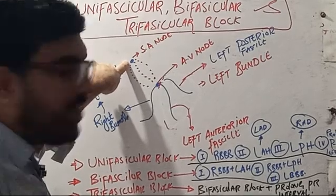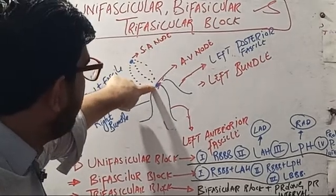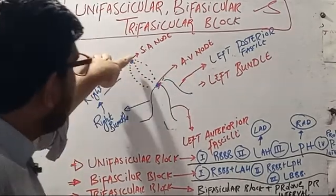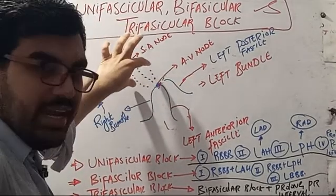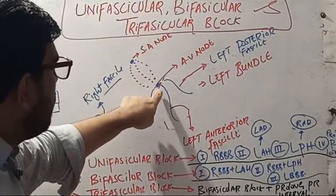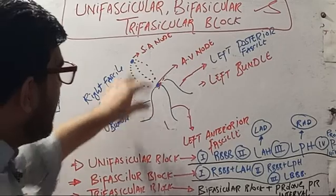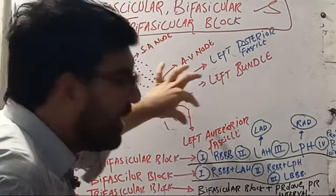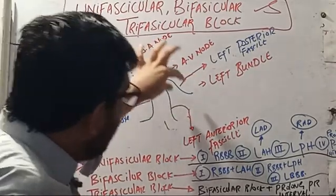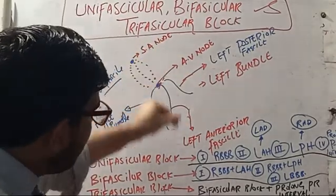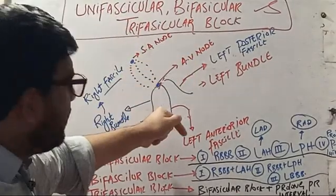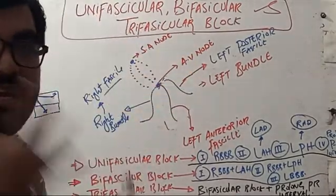Let's suppose this is the SA node, this is the AV node, and these are the branches. From the SA node, the impulse travels through the atria and comes to the AV node. Now the fascicles start from this AV node. This is the right bundle, and this is the whole left bundle. In the left bundle, we have the anterior fascicle and posterior fascicle.